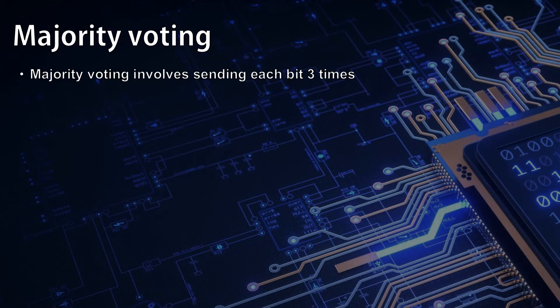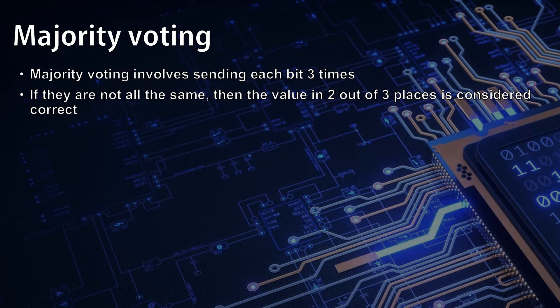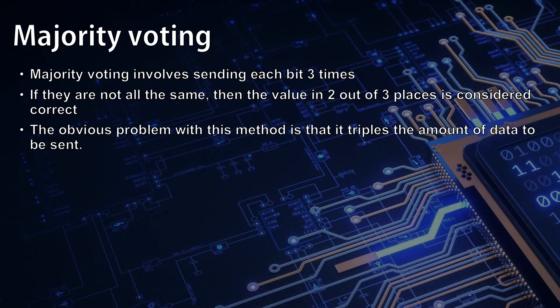Majority voting involves sending each bit three times. If all three bits are not the same, then the value in 2 out of 3 places is considered to be correct. The obvious problem with this method is that it triples the amount of data that needs to be sent.